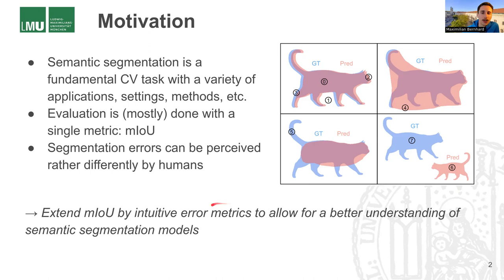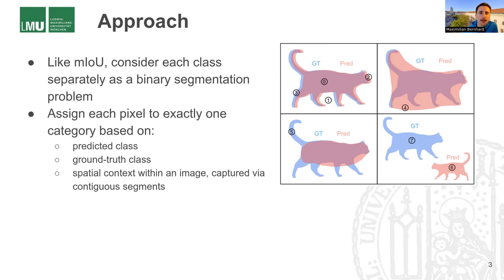So our goal was to extend the evaluation of semantic segmentation models beyond the mean intersection over union by introducing error metrics that are intuitive and allow for a better understanding of semantic segmentation models. And we do this by starting similarly to mIoU.